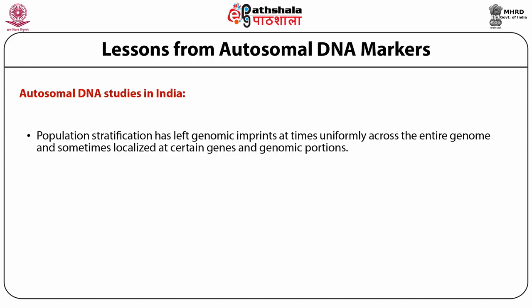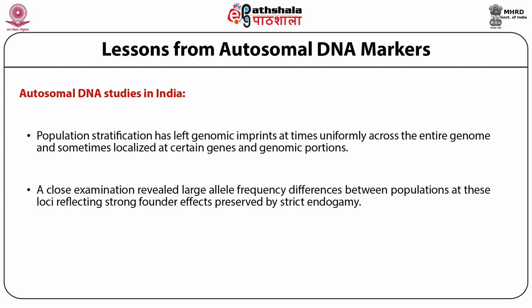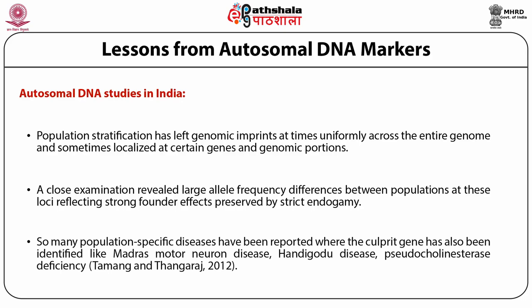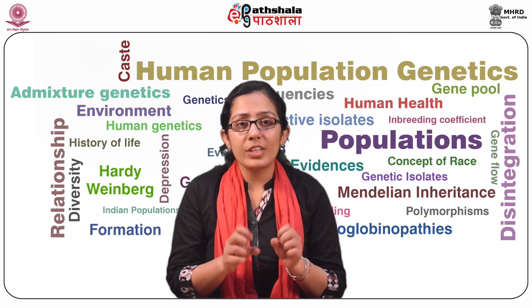The population stratification has left genomic imprints, sometimes uniformly across the entire genome and sometimes localized at certain genes. Assessment of these variations has been useful in understanding the pronounced effect of genetic heterogeneity while studying complex diseases among Indian populations. A close examination revealed large allele frequency differences between populations at these loci, reflecting strong founder effects preserved by strict endogamy. Many population-specific diseases have been reported where the culprit gene has been identified, like Madras motor neuron disease and pseudo-cholinesterase deficiency, and characteristic genetic patterns like population-specific haplotypes have been identified.